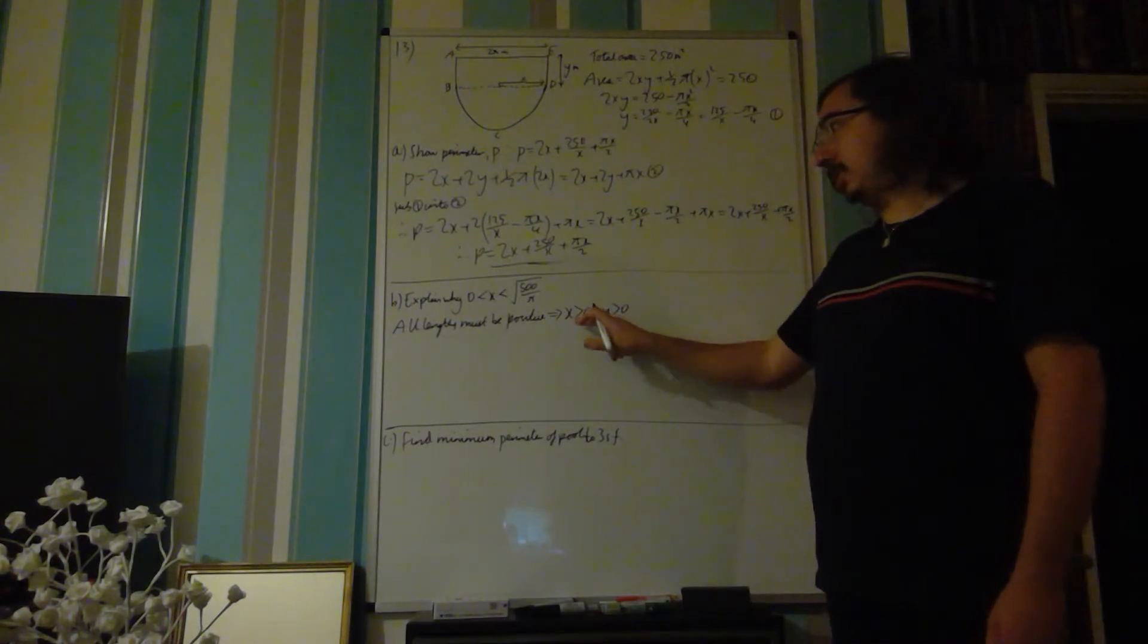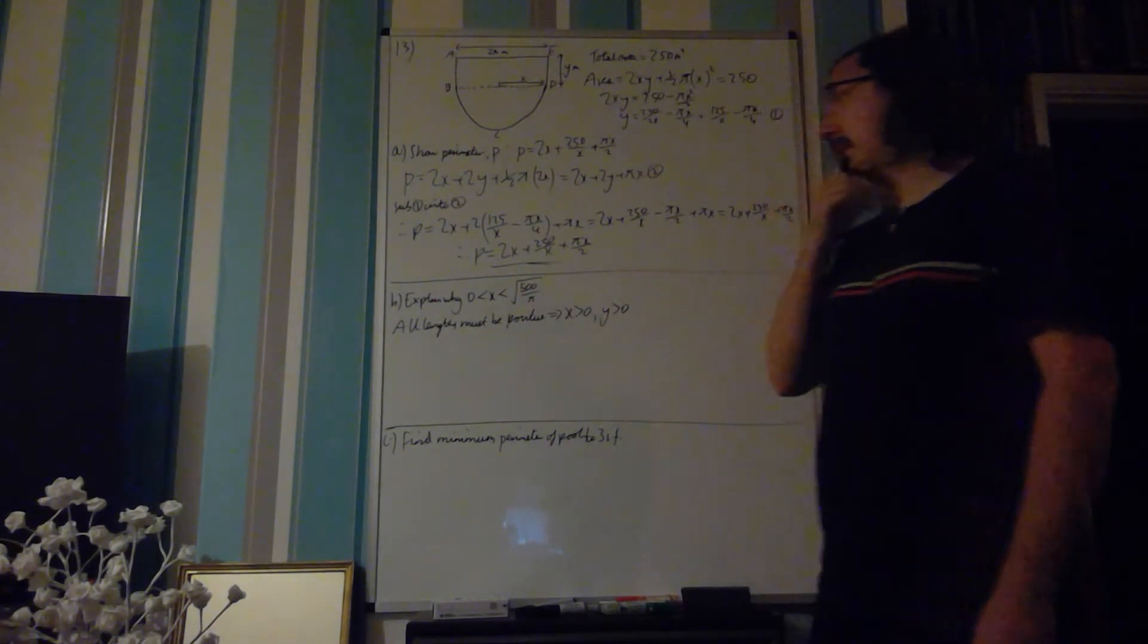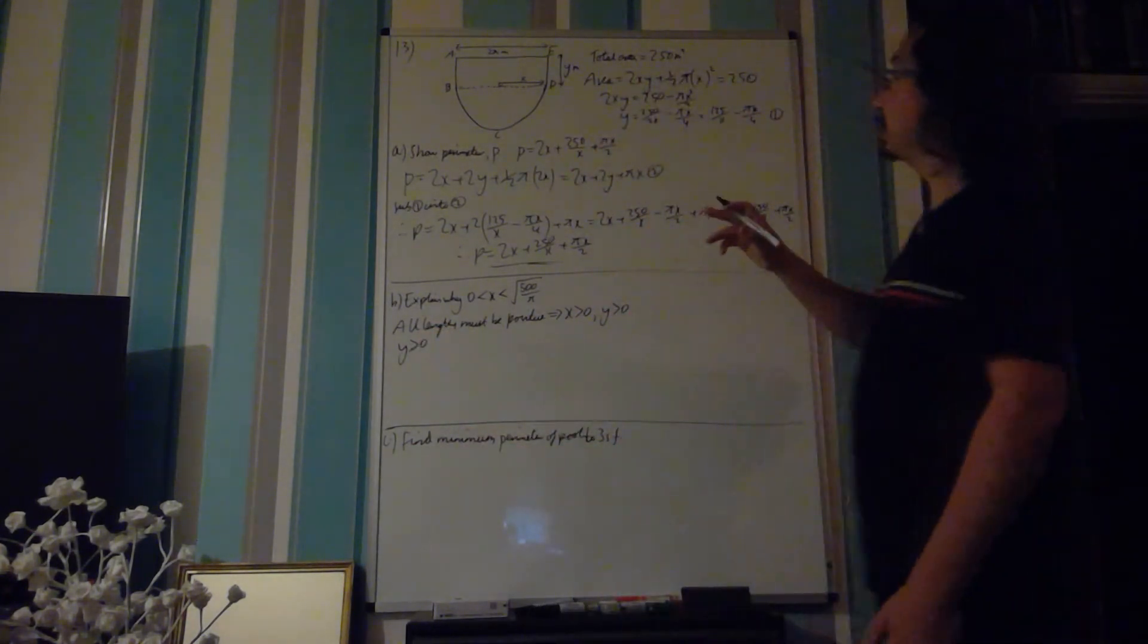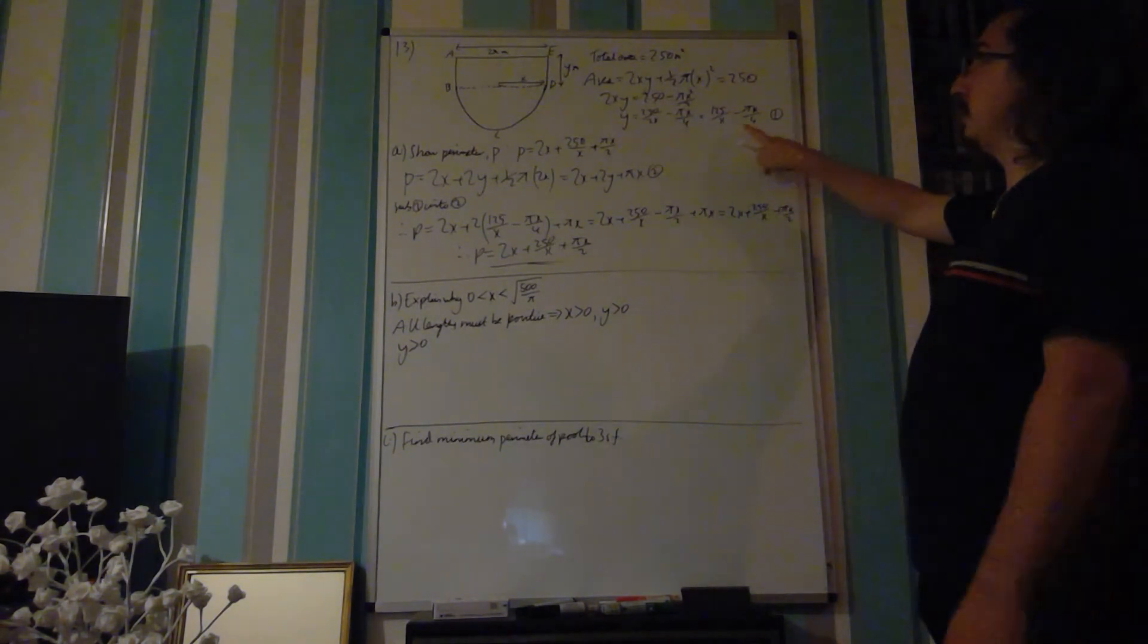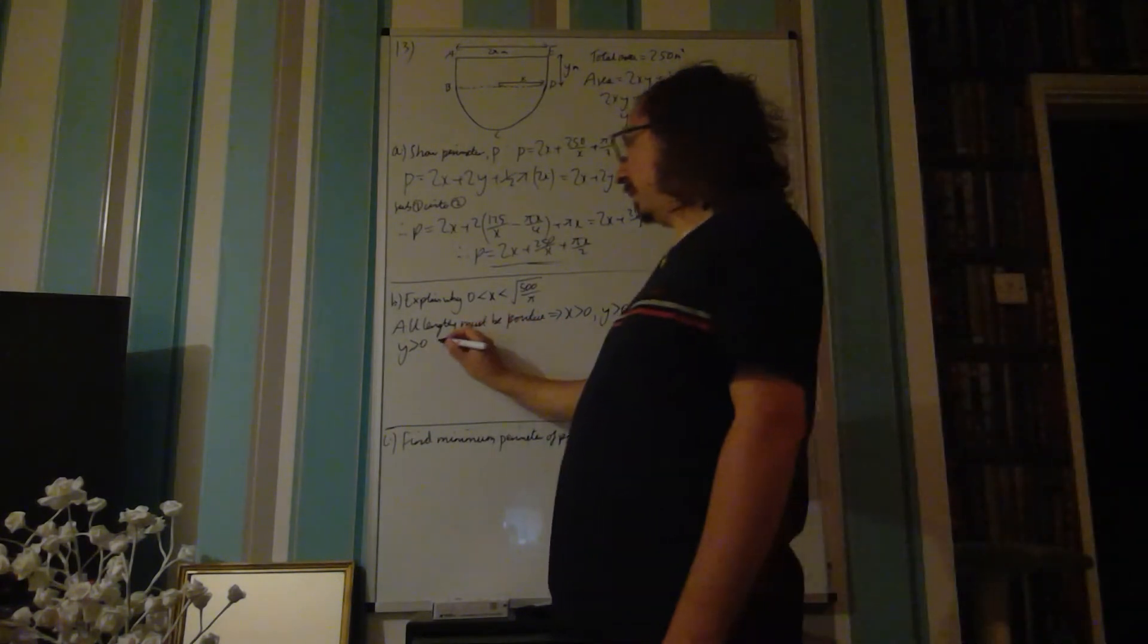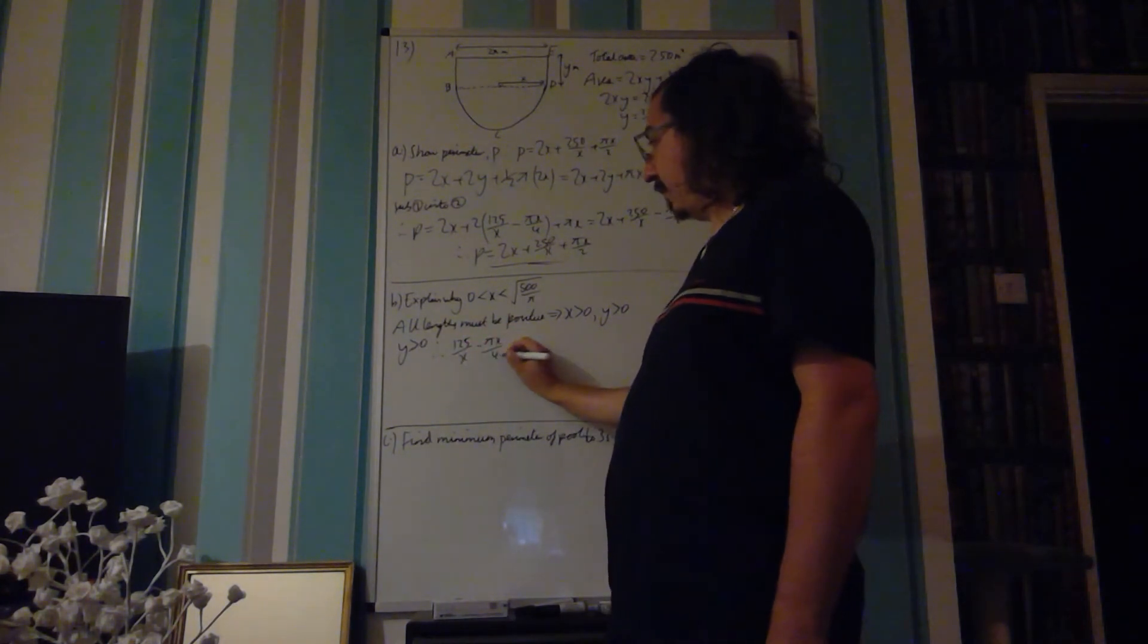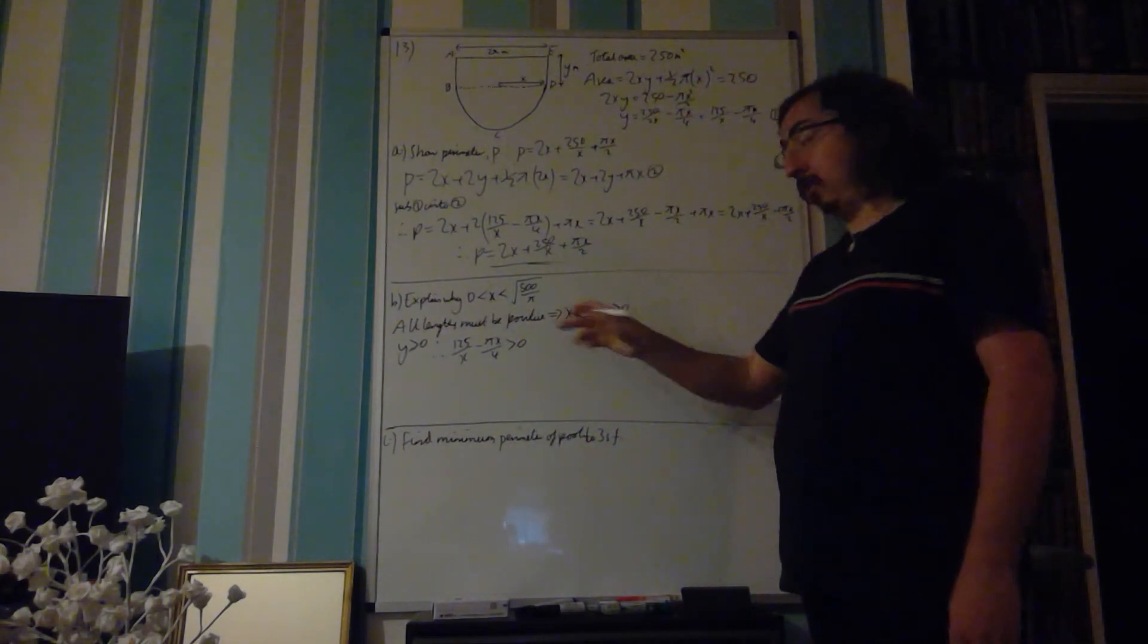This x is greater than 0 actually gives us one of our two limits. But what about this other side? Well, if we use y is greater than 0, and we go back to something we found in the first part, part a, well, we have an expression for y. So actually, we can use this and say, well, if y is greater than 0,